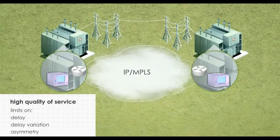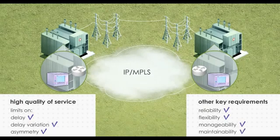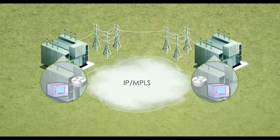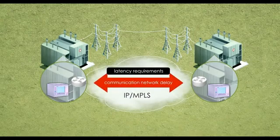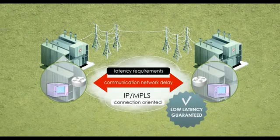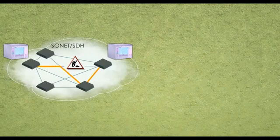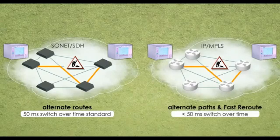An IP MPLS network can meet these as well as other key requirements such as reliability, flexibility, manageability, and maintainability. A major concern for utilities is whether the IP MPLS network can meet the strict latency requirements for protection signals between transmission substations. Unlike traditional best effort connectionless IP technology, IP MPLS is connection oriented and capable of guaranteeing low latency service. Sonet SDH networks can be provisioned to provide alternate routes for mission critical traffic, providing less than 50 milliseconds switchover time when operating correctly. IP MPLS networks support alternate paths and fast reroute with sub-50 milliseconds switchover time.